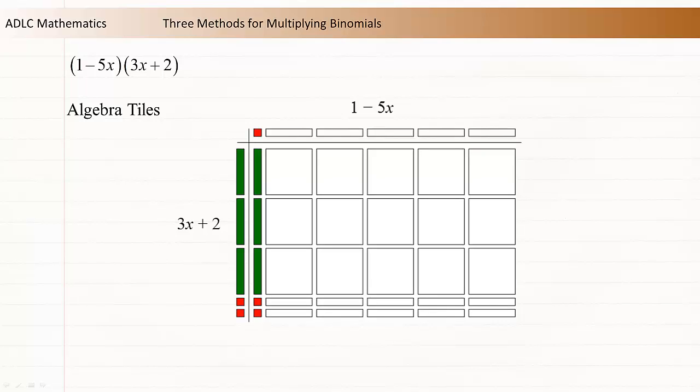This inner rectangle represents the product, but it can be simplified. There are both positive x tiles and negative x tiles. These can be combined into zero pairs, which will eliminate these tiles. Remove these pairs one at a time.